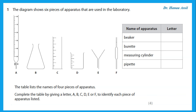Which one is the beaker? You should know that the beaker is D — that is where we put solutions or substances together to react. Of course, we don't use a beaker to measure the volume of anything even though it has graduations. Now, where is the burette? Remember, the burette is the one that has a tap and graduations.